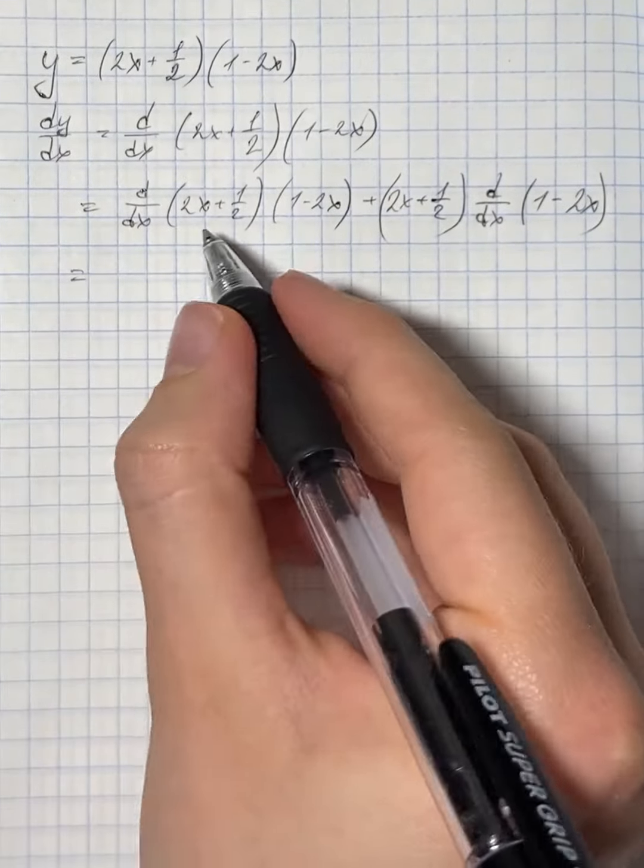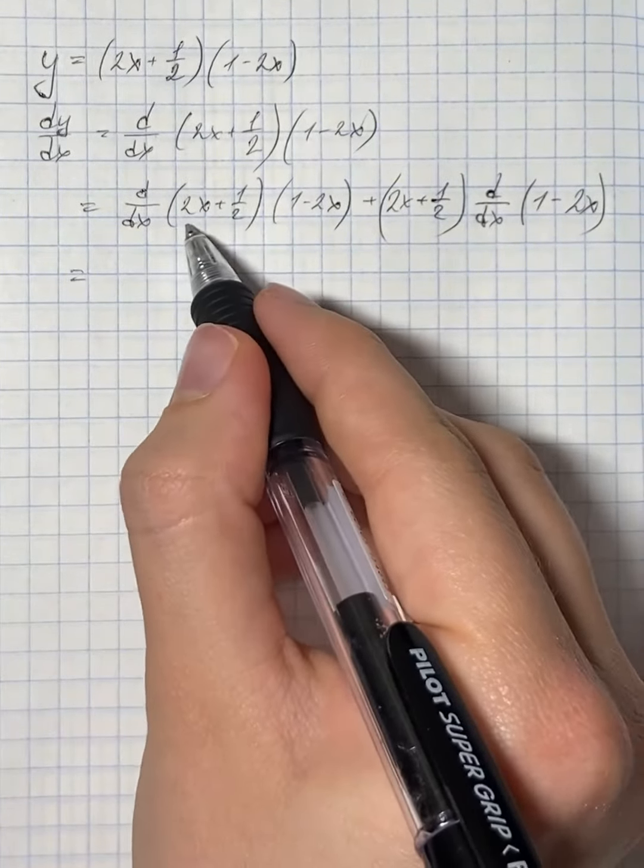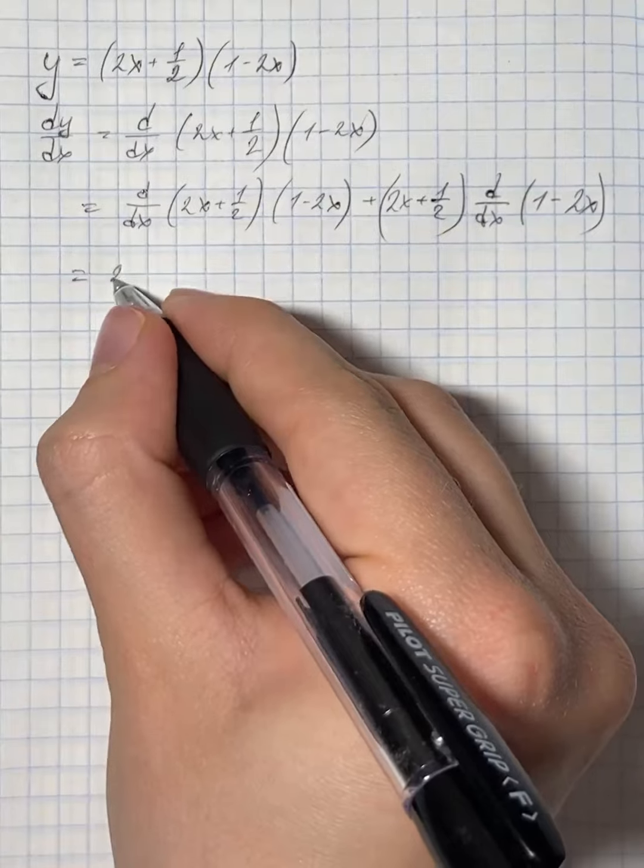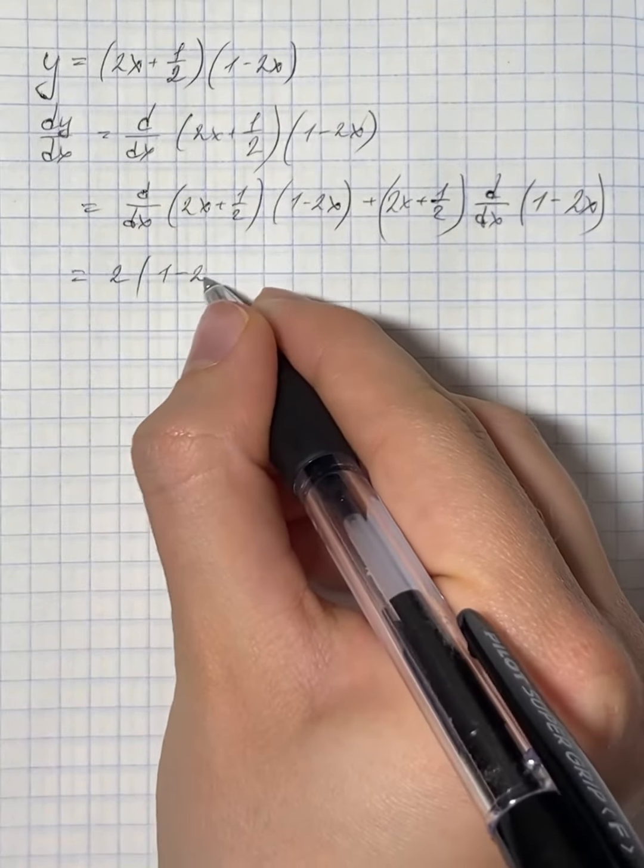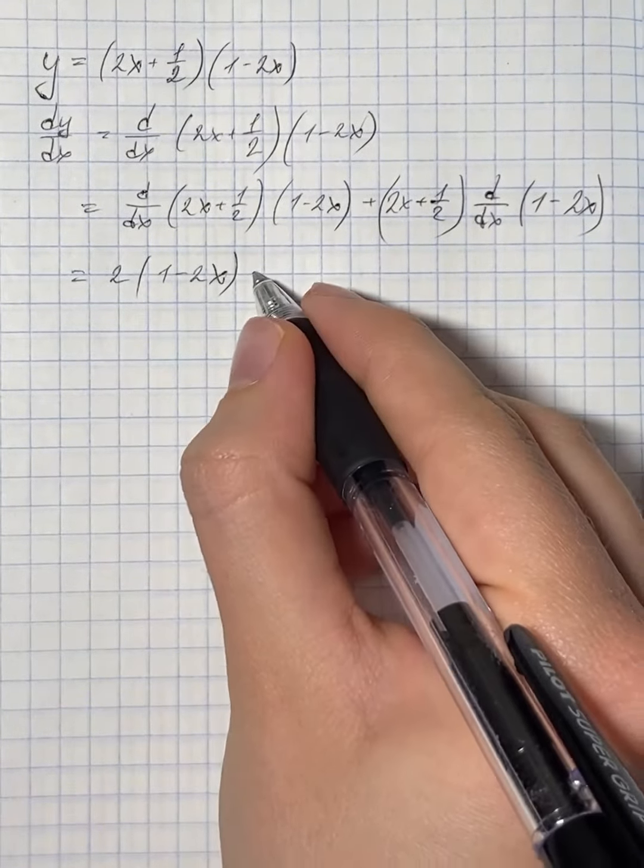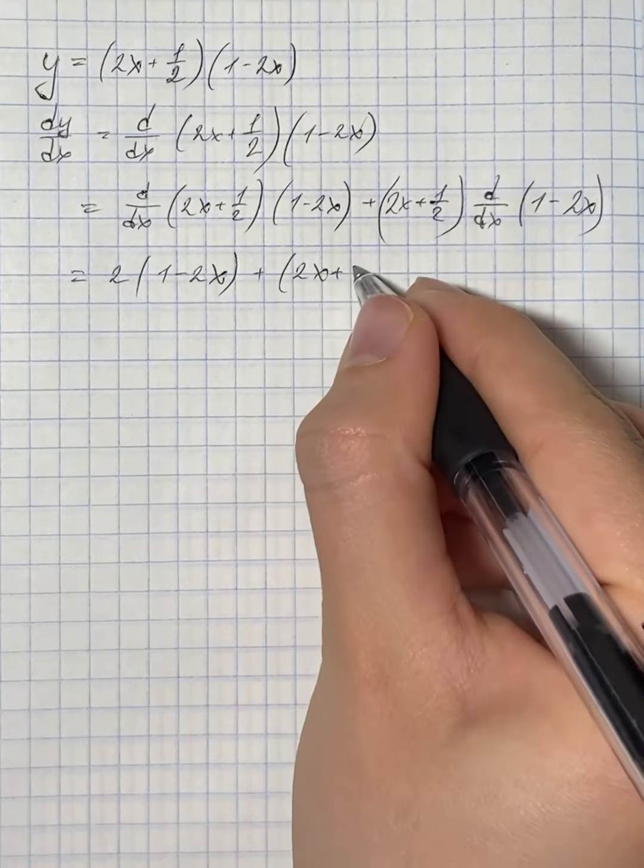So that's going to be the derivative of 2x plus 1 half, which is 2, times 1 minus 2x, plus 2x plus 1 half.